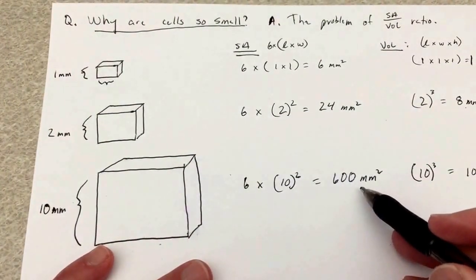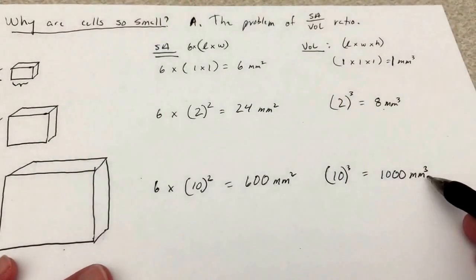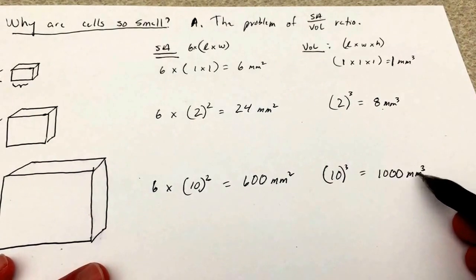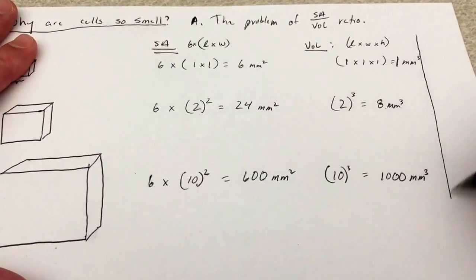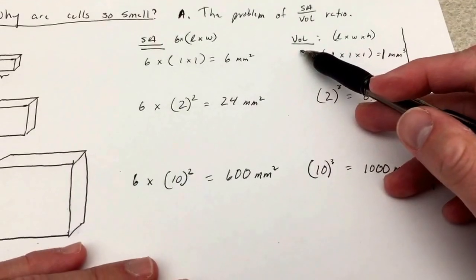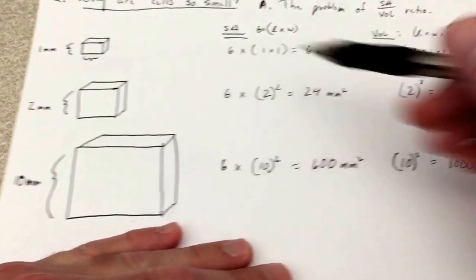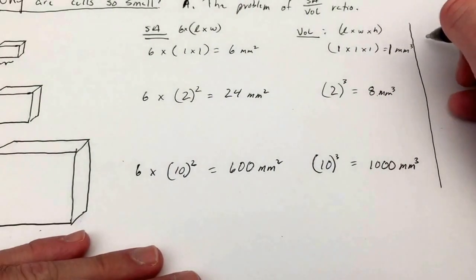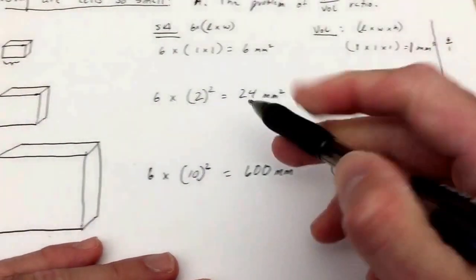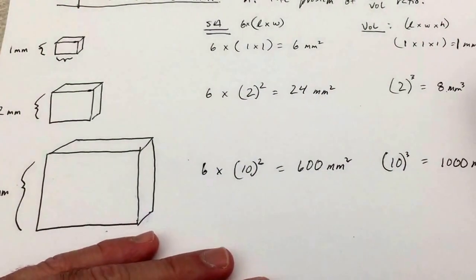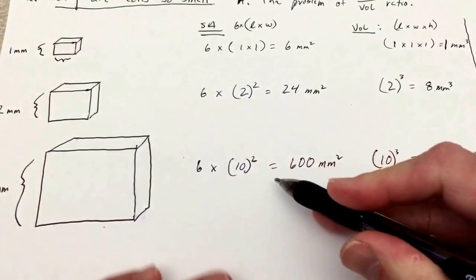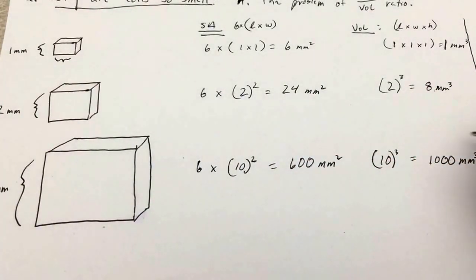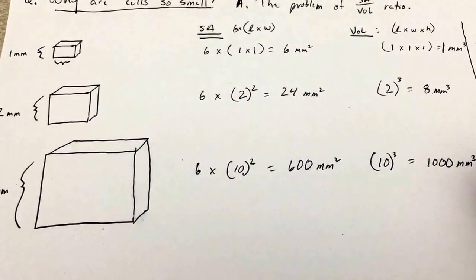Millimeters squared gives us surface area — two dimensions. Millimeters cubed gives us three-dimensional volume. Now let's look at the surface area to volume ratio for each cube. For the one millimeter cube, it's six over one. For the two millimeter cube, 24 over eight, which reduces to three to one. For the ten millimeter cube, 600 over 1,000, which reduces to six over ten, or three over five.